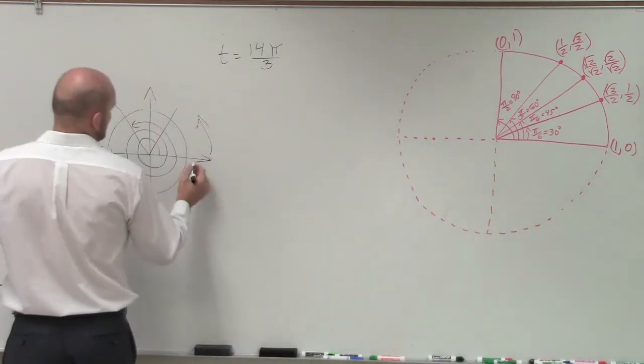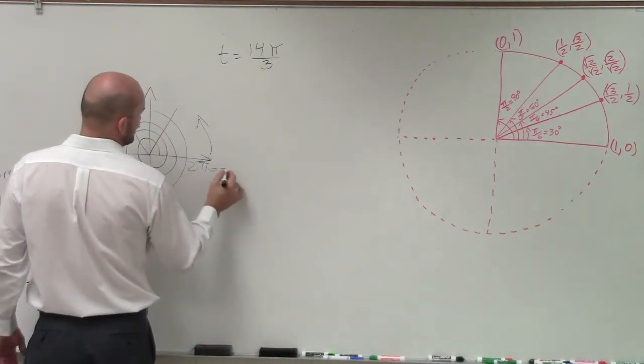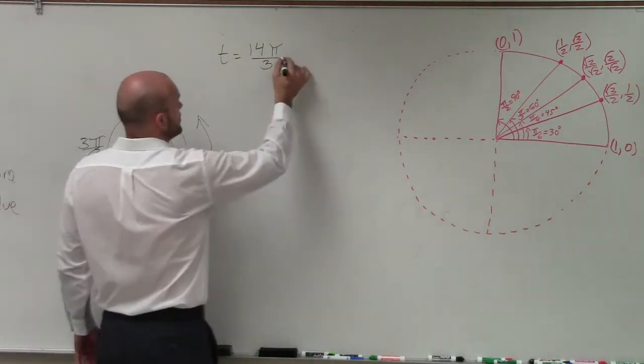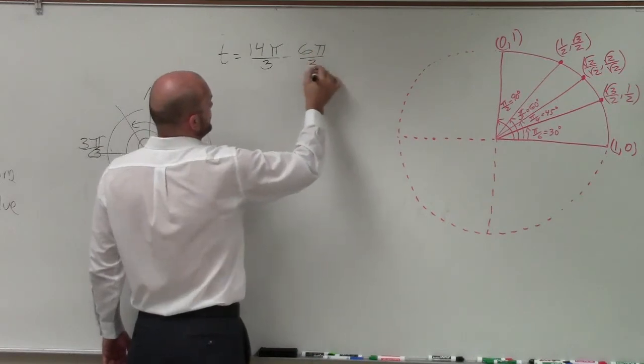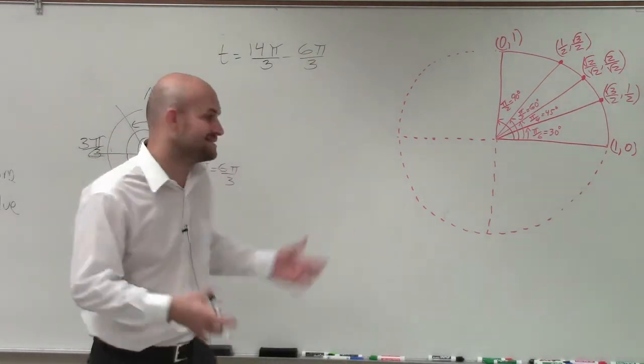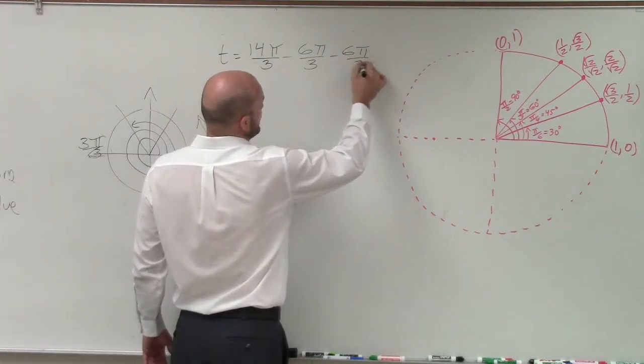Now, remember, 2π in this case is the same thing as 6π over 3. So that's going to be used because my point is it has a denominator of 3. So I'll subtract 6π over 3. And when I do that, I still have 8π over 3. So I can continue. So I'll subtract 6π over 3 again.